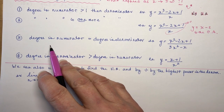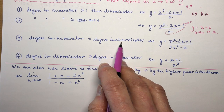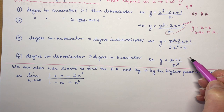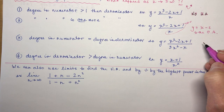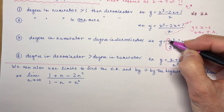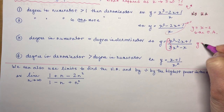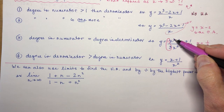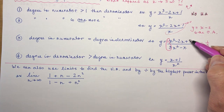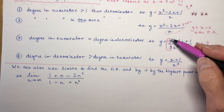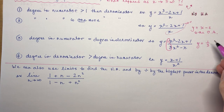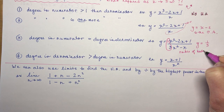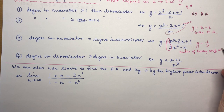Case 3: degree of numerator equals degree of denominator. For (x² − 2x + 1)/(3x² − x), the horizontal asymptote is the ratio of the leading coefficients of the highest-degree terms — 1 over 3. Make sure the polynomial is in descending order so you match the right coefficients.